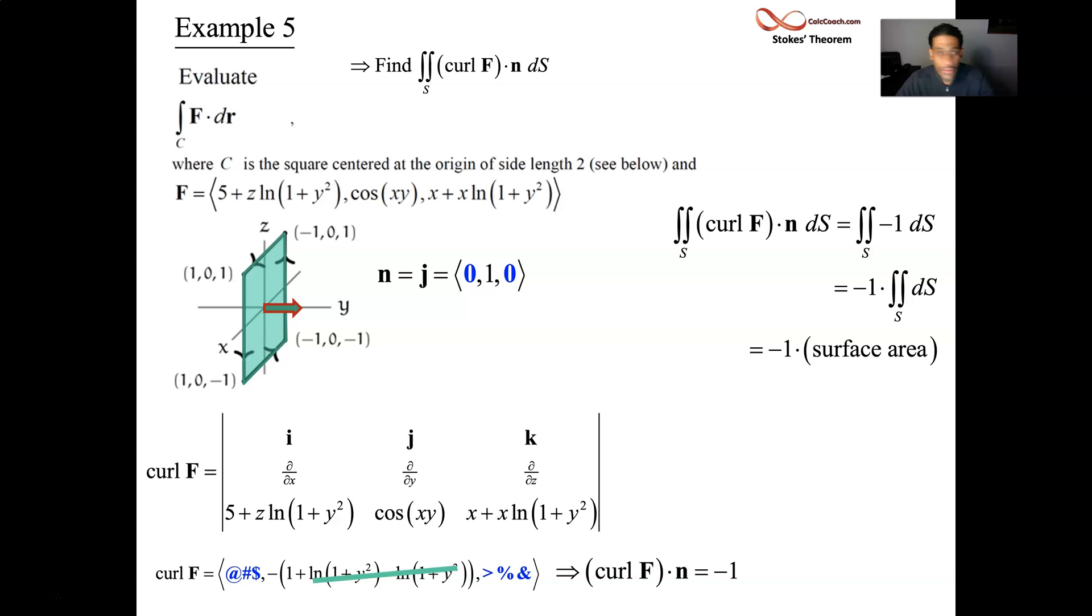But we have a nice surface. We have a square. So when it's time to figure out the surface area, we just need the area of that square. How long are those sides? Each one is 2. 2 by 2 square. So the surface area is 4. Don't forget you have that negative 1 though. So the value of this line integral that we didn't calculate is the same as the value of the surface integral that we did calculate, the outward flux of the curl. And we have exactly a negative 4 for our answer.